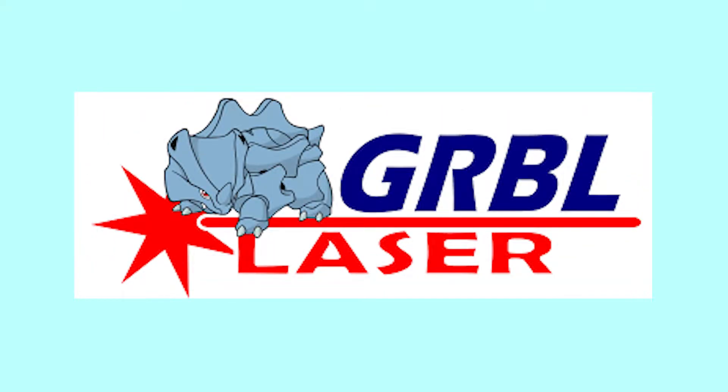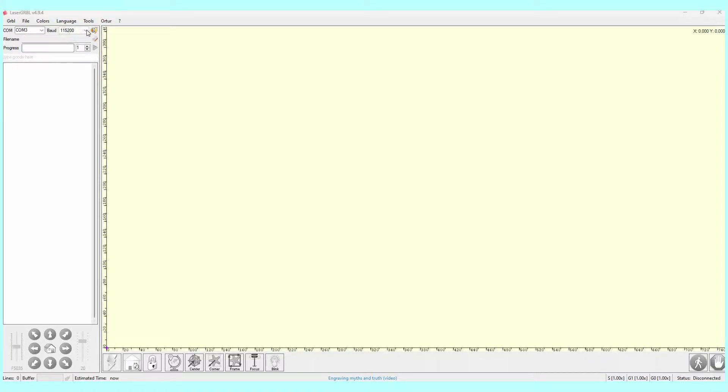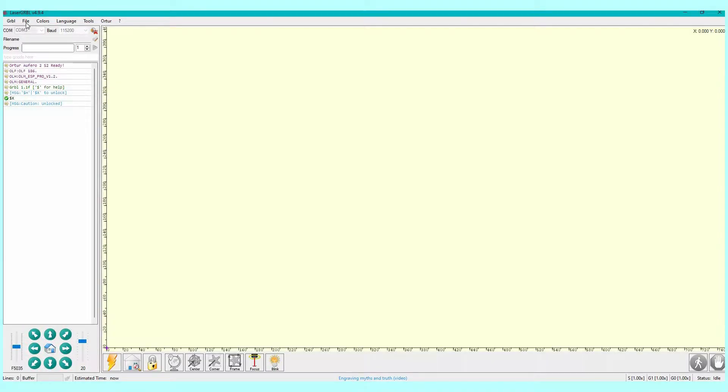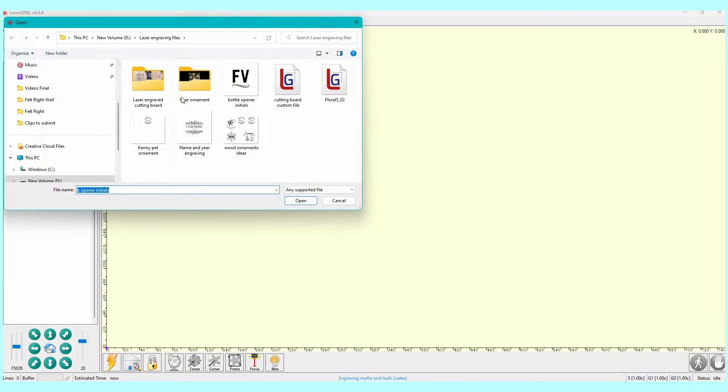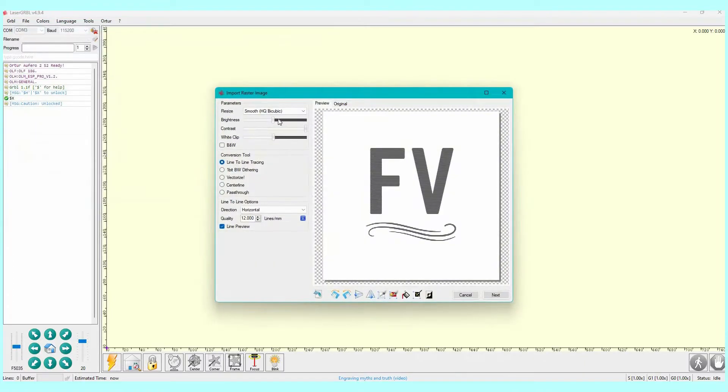Now I'm going to head over to LaserGRBL. This is a free laser software. It works pretty well. I love that it's free. So if you are just getting started with laser engraving and cutting, definitely take a look at this. I typed up some initials and a little design that I did on Canva and I downloaded it as a PNG. Now I uploaded it to LaserGRBL.